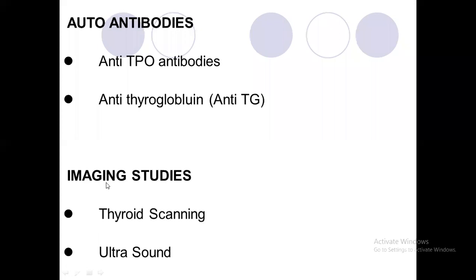Thyroid scanning is sometimes needed and will show decreased uptake of technetium-99. Ultrasound is needed only when there is a goiter — very rare cases. In an exam, you may be given a scenario and asked for the diagnosis, three key investigations, and the steps of management.